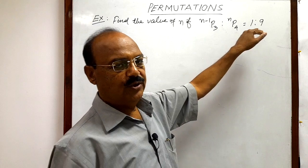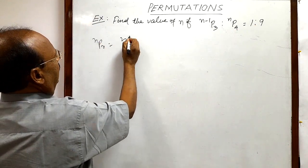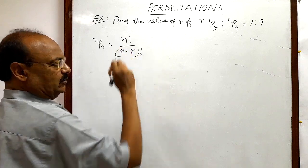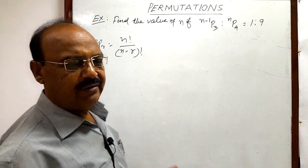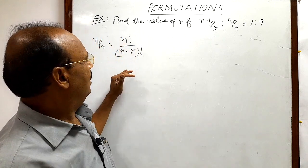For solving this question we will use the formula nPr = n! / (n-r)!. We have used this formula several times in previous videos. This is the formula for permutation of n objects taken r at a time.